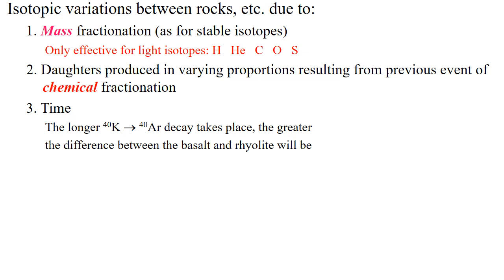Finally, we have time. Time, in terms of radiogenic isotopes, can change the ratio according to the duration of decay — this is the field we call geochronology. For example, potassium-40 decays into argon-40; the greater the time difference between a basalt and a rhyolite, the greater the isotopic difference. This is compounded by chemical fractionation, since potassium is more abundant in some rock types than others and therefore decays at different timescales in one rock compared to another.